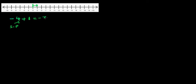Remember, when you're adding an integer you're going to the right, and if you're taking away or subtracting, you're going to the left. So what would happen if it is negative four take away one?